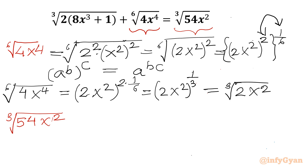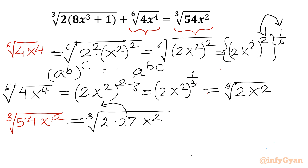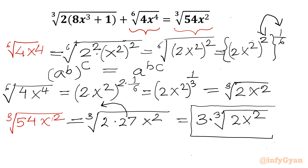Now I will consider the cube root of 54x². We can write 54 as 2 times 27, so cube root of (2 × 27 × x²). Now 27 is 3³, so 3 comes out. This gives us 3 times cube root of (2x²). So the RHS simplifies to 3∛(2x²), and the second term on the LHS is ∛(2x²).